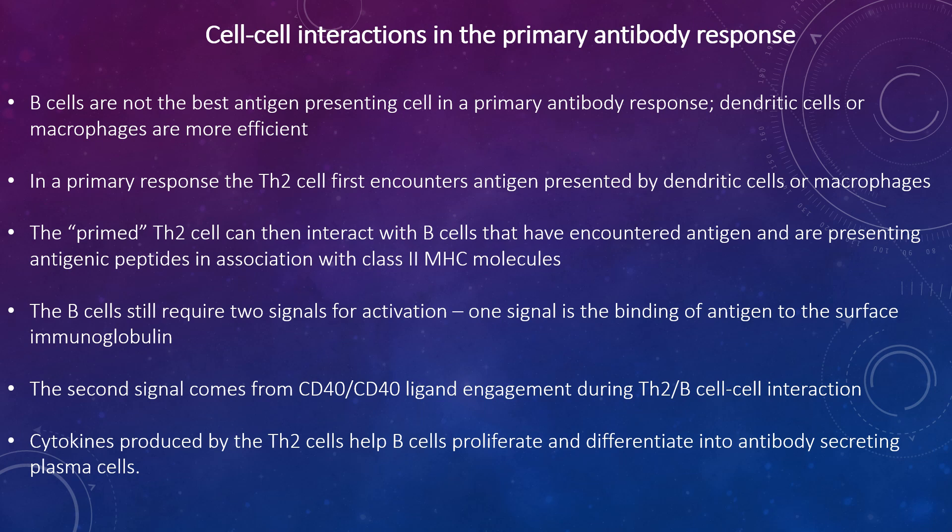In a primary response, the Th2 cell first encounters antigens presented by dendritic cells and macrophages. The primed Th2 cells can then interact with B cells that have encountered antigen and are presenting antigenic peptides in association with class 2 MHC molecules. The B cells still require two signals for activation: one signal is the binding of antigen to surface immunoglobulin, and the second signal comes from CD40-CD40 ligand engagement during Th2-B cell interaction.